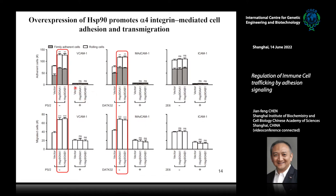When we overexpressed Hsp90 in T-cells, it showed the exact same phenotype — it enhances cell adhesion and transmigration on ICAM-1 or MAdCAM-1 surfaces. That means it promotes alpha-4 integrin-mediated cell adhesion and migration. This experiment at 37 degrees shows that you only need to overexpress Hsp90 to get these effects — you don't even need 40-degree treatment.